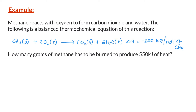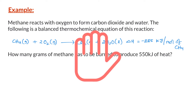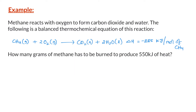The enthalpy change for this reaction is minus 885 kilojoules per mole of methane consumed. The question is: how many grams of methane has to be burned to produce 550 kilojoules of heat? According to the balanced thermochemical equation, the amount of heat released when 1 mole of methane is completely consumed is 885 kilojoules.